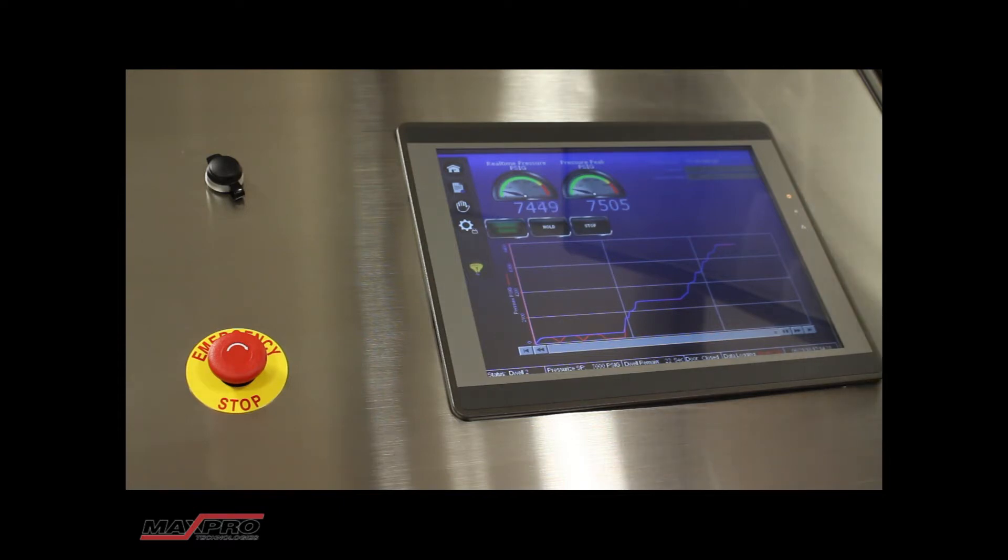We've now reached the final test pressure of 7500 PSI. And we've entered the dwell portion of the test. Along the bottom of the screen you'll see a status bar which gives information about the system and the test that you're running.